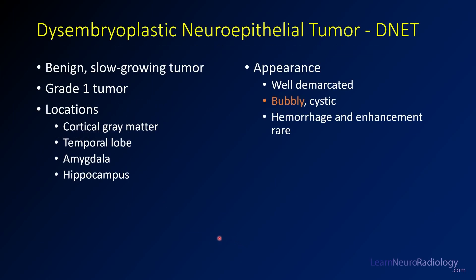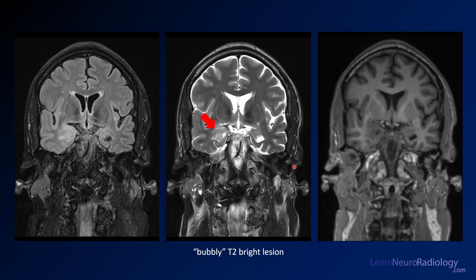This is a DNET, or dysembryoplastic neuroepithelial tumor. These are benign grade 1 slow-growing tumors that usually occur in the temporal lobes. The locations are commonly in the cortical gray matter, around the amygdala and hippocampus. They tend to be pretty well demarcated. The characteristic term used to describe them is 'bubbly.' These can sometimes have hemorrhage or enhancement, but it's pretty rare for these low-grade tumors.